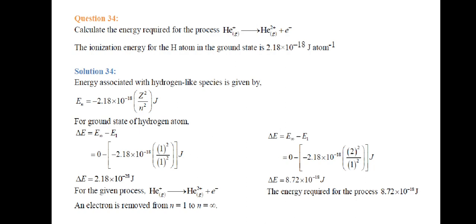For the given process He⁺ → He²⁺ + electron, n goes from 1 to infinity. So ΔE = E∞ − E₁ = 0 − (−2.18 × 10⁻¹⁸ × Z²/n²). With Z = 2 and n = 1, this gives 8.72 × 10⁻¹⁸ joules. The required energy is 8.72 × 10⁻¹⁸ joules.